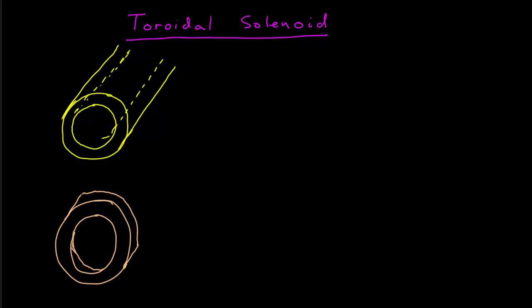Let's take a few minutes to describe what a toroidal solenoid is. Imagine a yellow cylinder with some inner radius A and some outer radius B, extending some distance. If we chop a section of this cylinder off, of some length L, we get something that looks like the orange picture shown here.